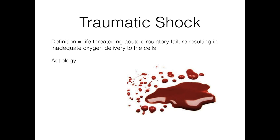First and foremost, hemorrhagic shock is the commonest cause of traumatic shock. It's the cause of 40% of deaths after trauma and the leading preventable cause of death in trauma worldwide. It's found across a number of organ systems: external hemorrhage, hemorrhage into the chest cavity, abdomen, pelvis, and long bones — but also retroperitoneal bleeding and degloving injuries in obese patients, which can be another cause of concealed hemorrhagic shock.